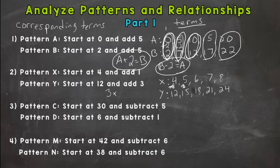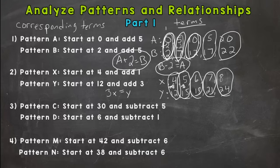So 3X, or 3 times X, gives me Y. 4 times 3 is 12. 5 times 15. Or 5 times 3 is 15. 6 times 3 is 18. 7 times 3 is 21. And 8 times 3 is 24. So the terms in pattern X multiplied by 3 will give you the corresponding terms in pattern Y. Where the opposite would be dividing Y by 3 to get the corresponding terms in X.